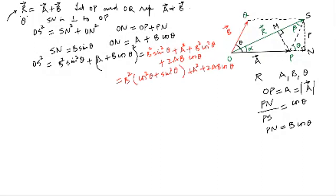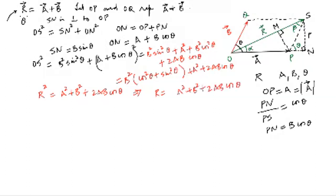So from this, OS is the magnitude of vector R, which I represent as r. Therefore r squared equals A squared plus B squared plus 2AB cos theta, and r equals the square root of A squared plus B squared plus 2AB cos theta. The resultant is a positive quantity — a line segment length cannot be negative — so I omit the negative sign. I have successfully expressed the resultant in terms of A, B, and theta.